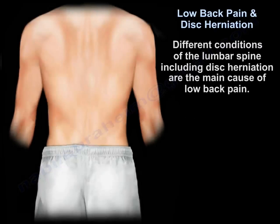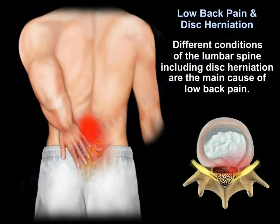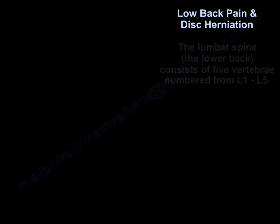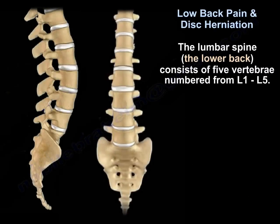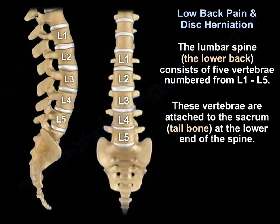Different conditions of the lumbar spine including disc herniation are the main cause of low back pain. The lumbar spine, which is the lower back, consists of five vertebrae numbered from L1 to L5. These vertebrae are attached to the sacrum — the tailbone — at the lower end of the spine.